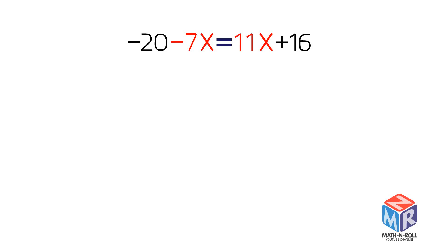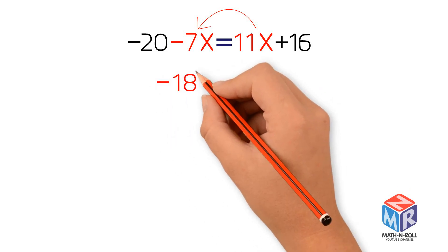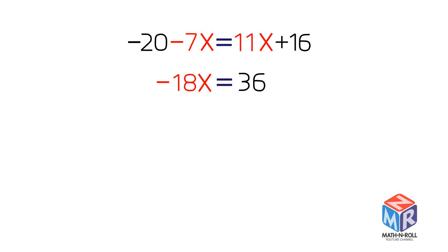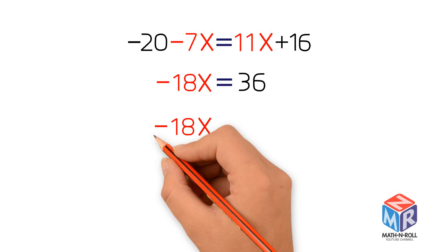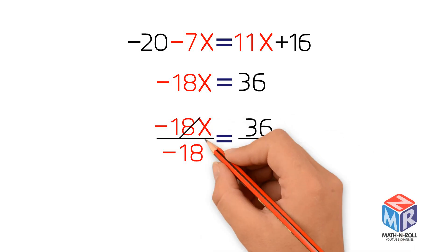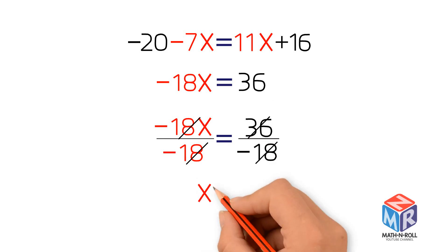Let's try another example. Negative 20 minus 7x equals 11x plus 16. To get the variables on one side, we carry 11x over the equal sign. The plus sign becomes a minus sign. We immediately combine like terms — minus 7x minus 11x becomes negative 18x. Next, we carry negative 20 over the equal sign with a positive sign. We combine the terms: 16 plus 20 equals 36. We are left with negative 18x equals 36. Next, we divide both sides by negative 18. x equals negative 2.